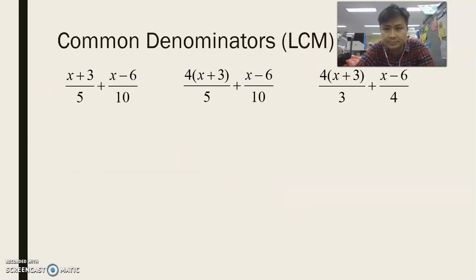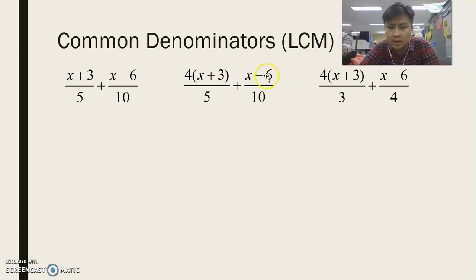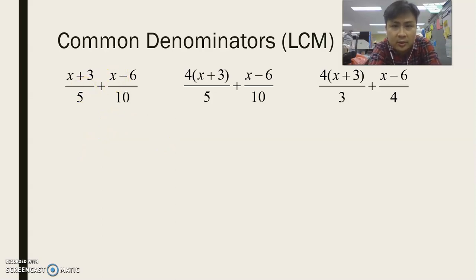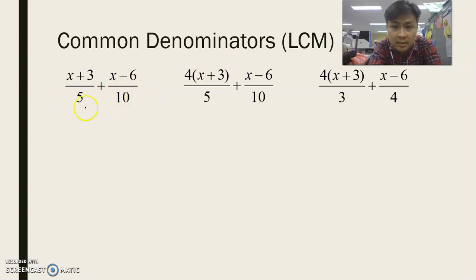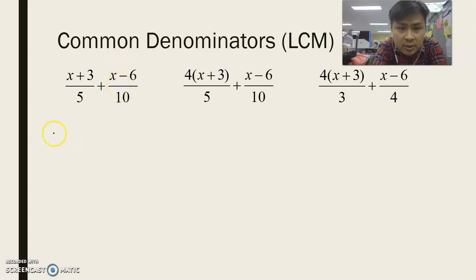Let's take a look at some denominators and how we identify the common denominators. This is actually something we've learned in Secondary 1. As you can see, we have two possible denominators: 5 and 10. The lowest common multiple of 5 and 10 is 10. So what we need to do here is multiply the first fraction by 2 over 2, and leave the second fraction alone.